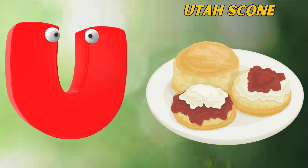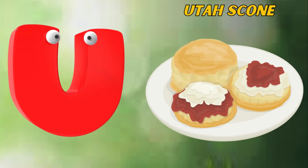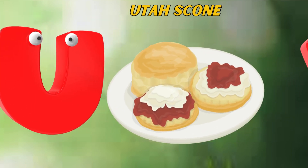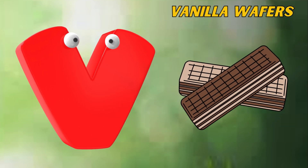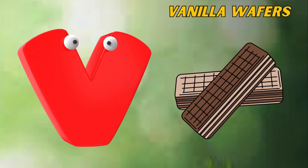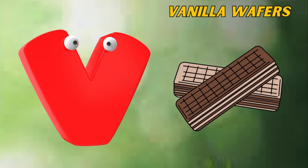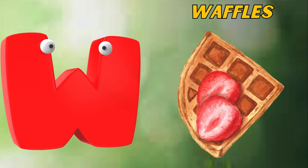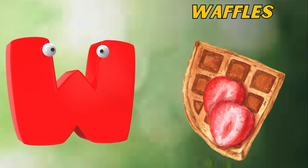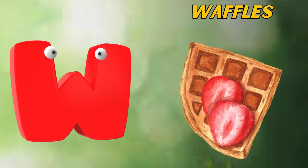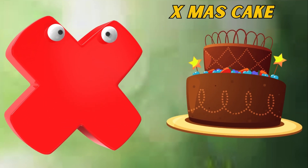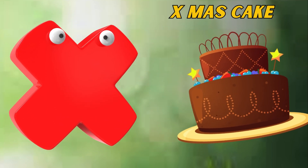U is for Utah Skull. U. Utah Skull. V is for Vanilla Wafers. V. Vanilla Wafers. W is for Waffles. W. Waffles. X is for X-Moss Cake. X. X-Moss Cake.